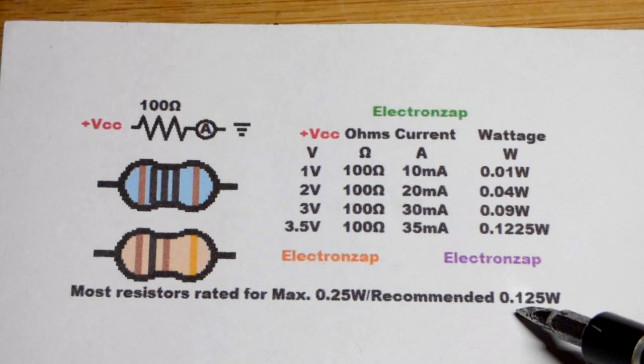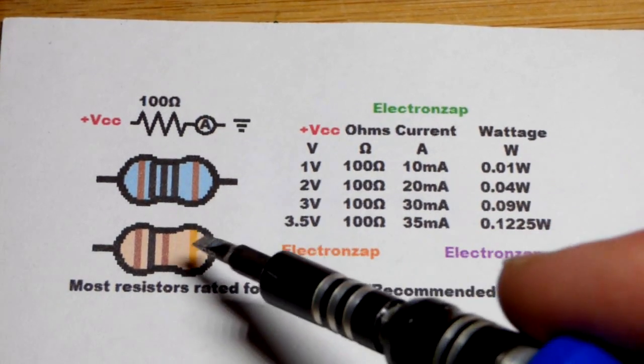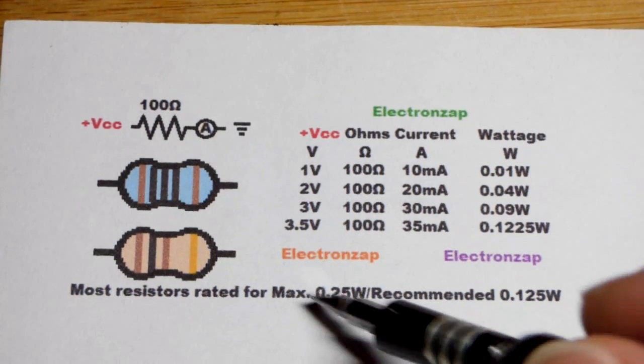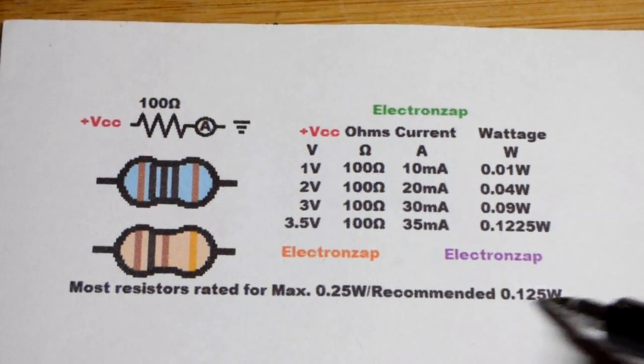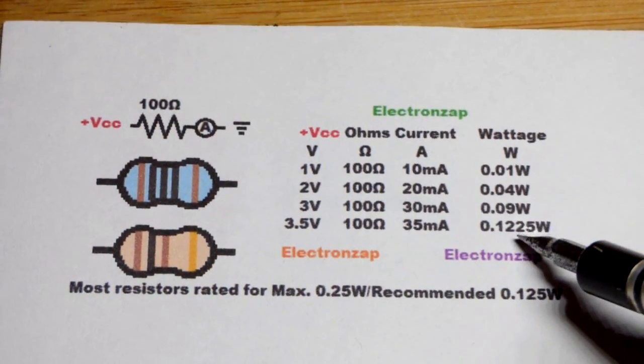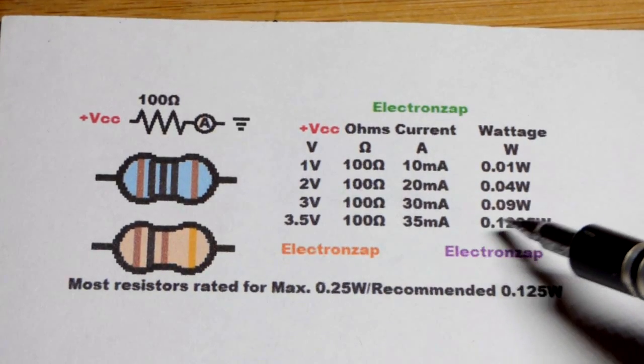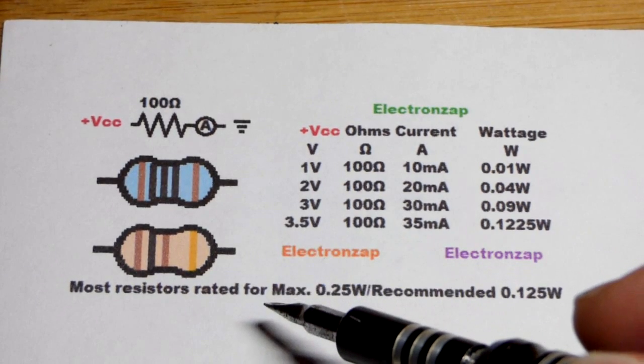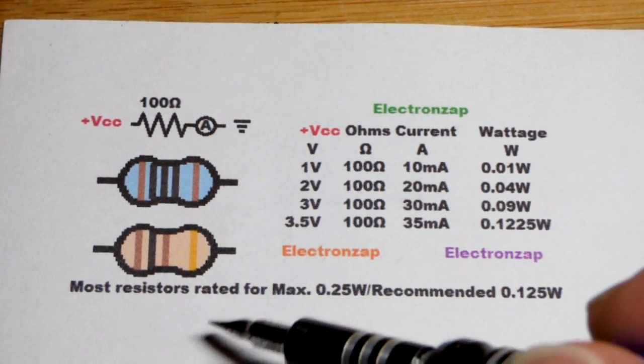That gives us half power if it's a quarter watt resistor, which has a maximum of 0.25 watts. It's recommended you stay halfway below that maximum, which we do. If you need more current from a 100 ohm resistor because you're going to put more voltage across it, you can use a higher wattage resistor.